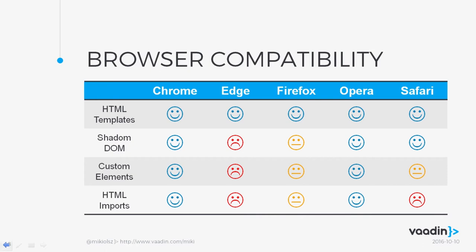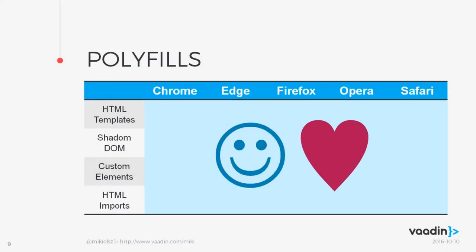This is the most recent data from webcomponents.org. There are five major browsers — some are quite okay to use already, and a certain other browser is not. We're developing modern web applications using web components and still have to target browsers, which is counterintuitive. So here comes polyfills, which enable all those features in all those browsers.